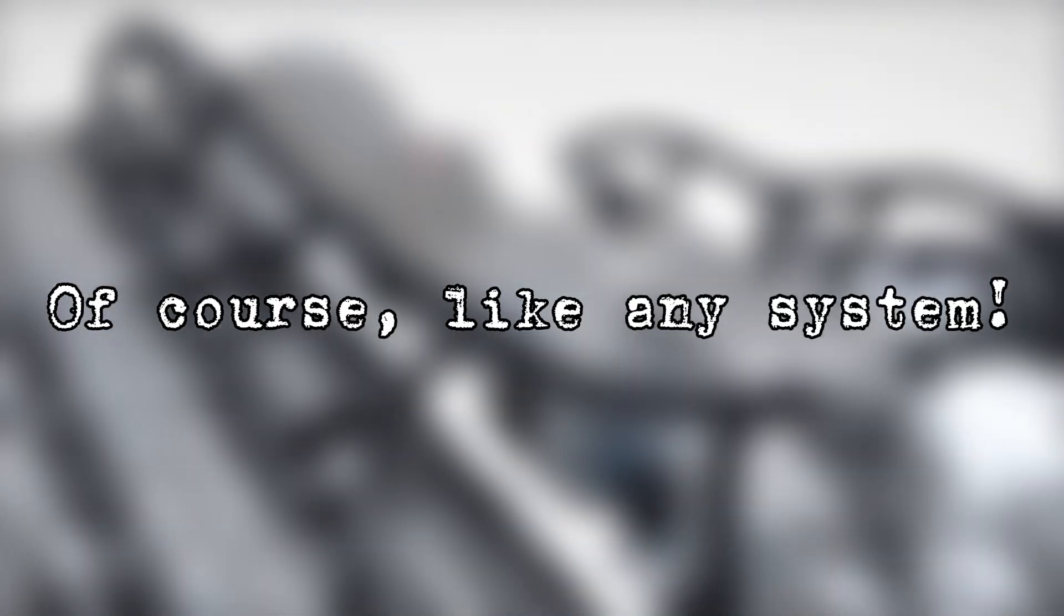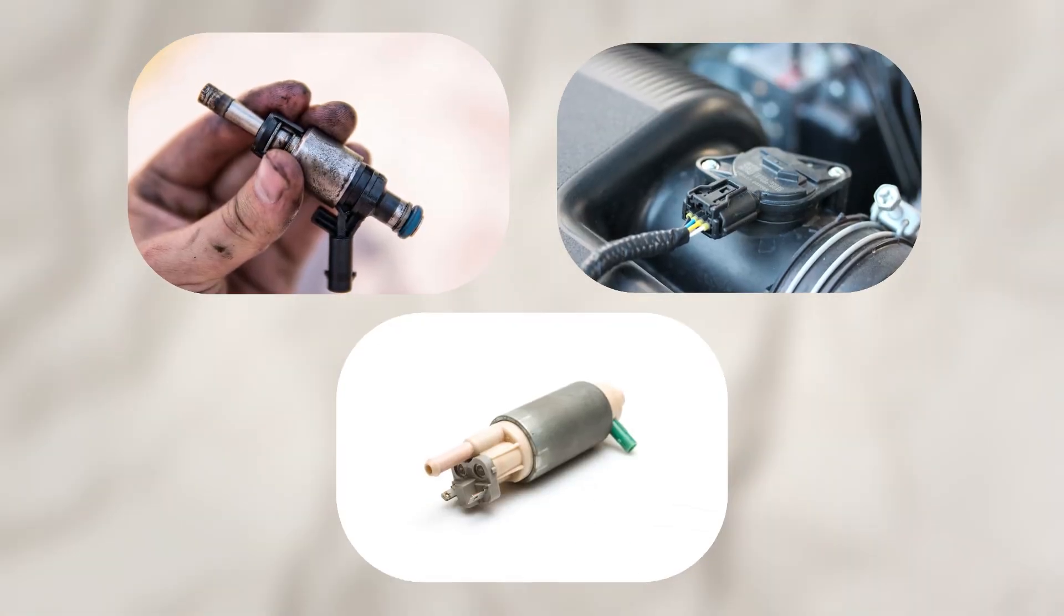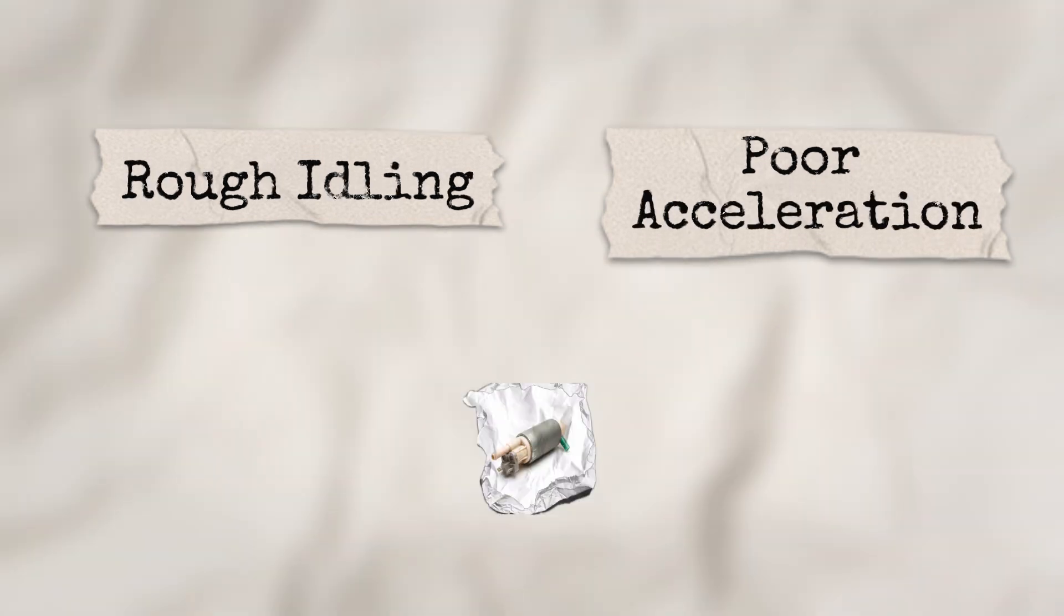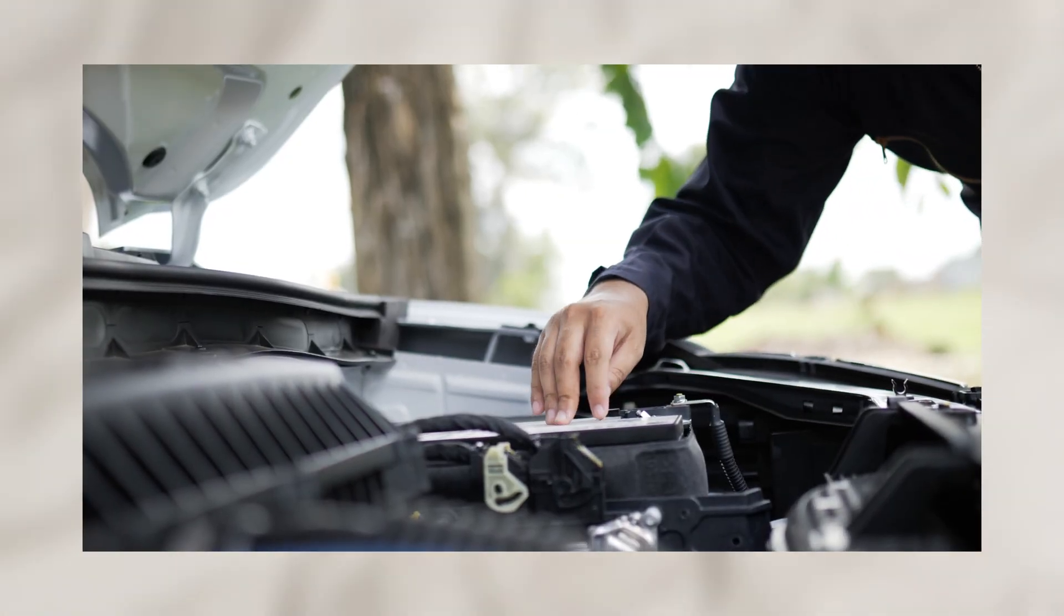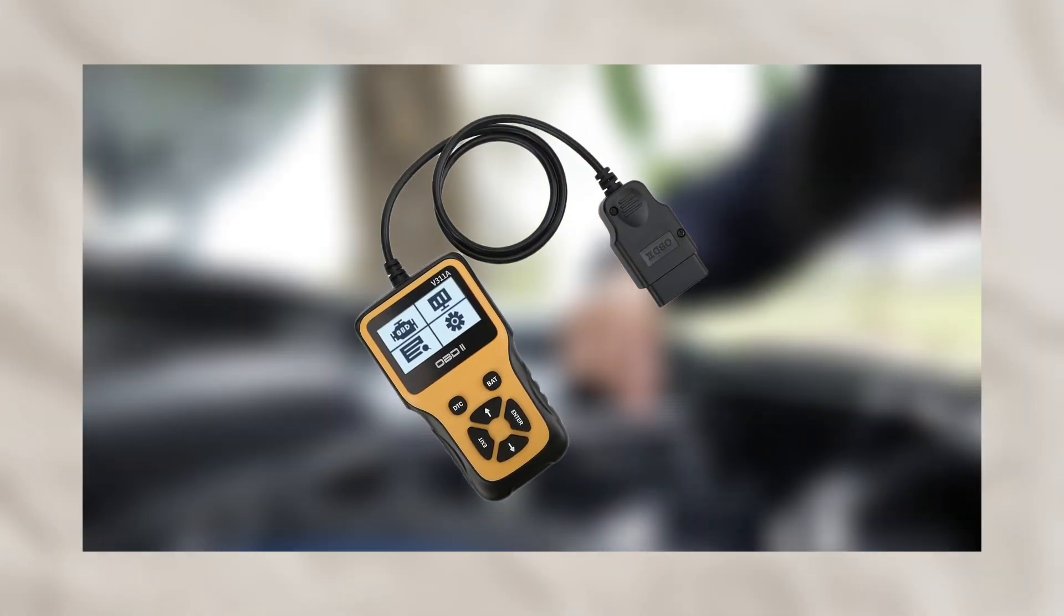Of course, like any system, fuel injection isn't perfect. Clogged injectors, faulty sensors, or a failing fuel pump can cause problems like rough idling, poor acceleration, or lower fuel economy. But the upside is that most of these issues are easier to diagnose because the ECU stores error codes, which mechanics can read with a simple scanner.